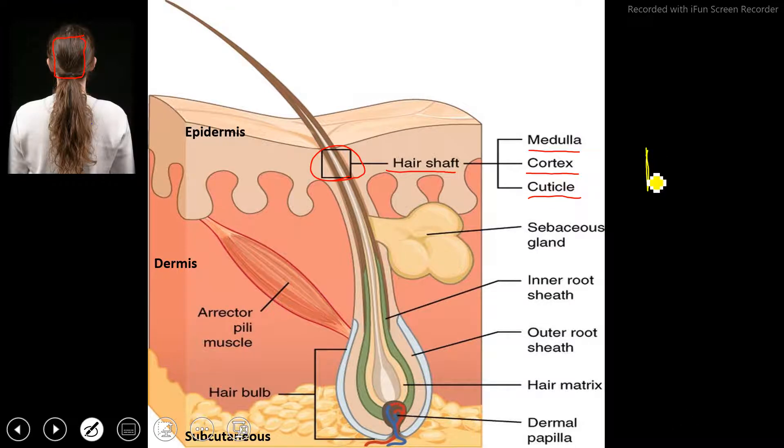The outermost part of the hair is called the cuticle. This is what we see. So some people have brown, some people have blonde, some people have red, some people have black.